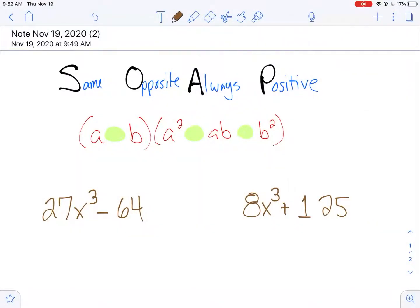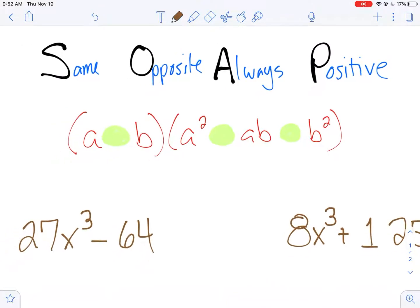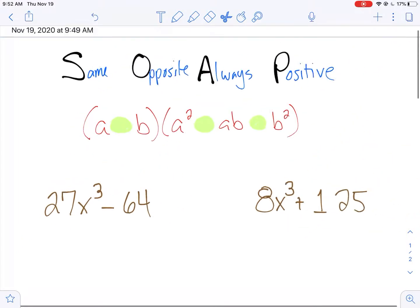I'm going to go over a sum and difference of cubes today. I'm going to be using this acronym: Same, Opposite, Always Positive. You will notice that when you factor out a sum or difference of cubes, it's always going to take the form I have here: (a±b)(a²±ab±b²). I'm going to be using this a few times today in the course of these two problems.